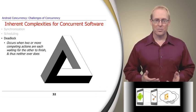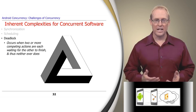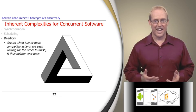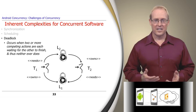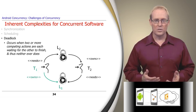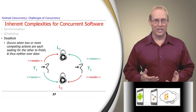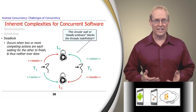Another inherent complexity is deadlock, which occurs when two or more competing actions are each waiting for the other to finish, and thus none ever do. The diagram on this slide shows a deadlock where thread T1 owns lock L1 and needs to acquire lock L2, while thread T2 owns lock L2 and needs to acquire lock L1. This circular wait, or deadly embrace, blocks the threads indefinitely.